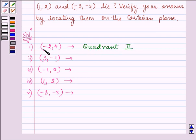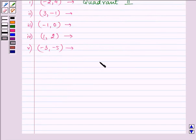That means x is negative and y is a positive number. Simultaneously we will be plotting them on the Cartesian plane also.